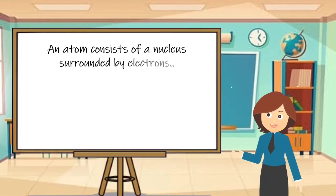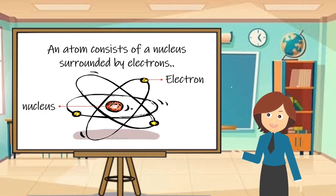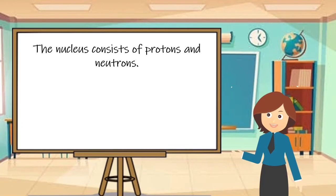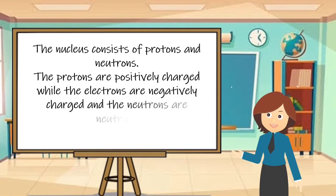An atom consists of a nucleus surrounded by electrons. The center part of the atom is the nucleus, and the particles revolving around it are called electrons. The nucleus consists of protons and neutrons. The protons are positively charged, while the electrons are negatively charged, and the neutrons are neutral.